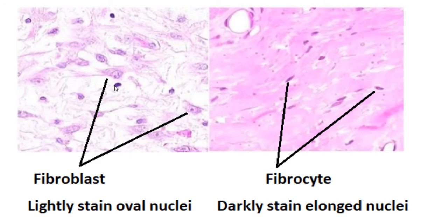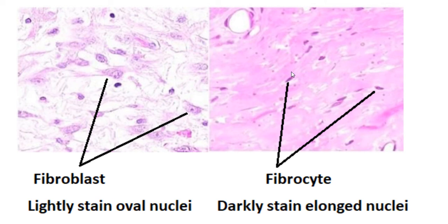This is a histological slice of connective tissue. Here, these are the fibroblasts because their nuclei are pale-staining and contain a prominent nucleolus. This is the fibrocyte because it contains darkly-stained, elongated nuclei, and the cytoplasm and processes are almost impossible to separate from the extracellular matrix.